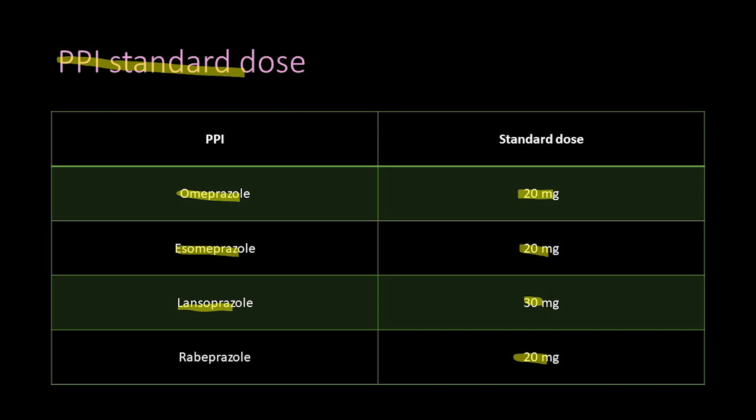Proton pump inhibitors are included in all H. pylori treatment regimens because they suppress gastric acid, which is important for H. pylori survival. Less gastric acid weakens H. pylori, and the alkaline pH created by PPIs increases the efficacy of antibiotics and their penetration through gastric mucus to reach H. pylori.